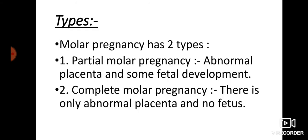Types — molar pregnancy basically दो तरह की होती है: partial molar pregnancy और complete molar pregnancy। Partial molar pregnancy cause होती है due to abnormal placenta और some fetal development। Complete molar pregnancy cause होती है due to only abnormal placenta and no fetus — इसमें specific abnormal placenta दिखाई देगा लेकिन कोई fetus नहीं होगा। Partial molar pregnancy में abnormal placenta के साथ-साथ fetal development में भी abnormality दिखाई देती है।